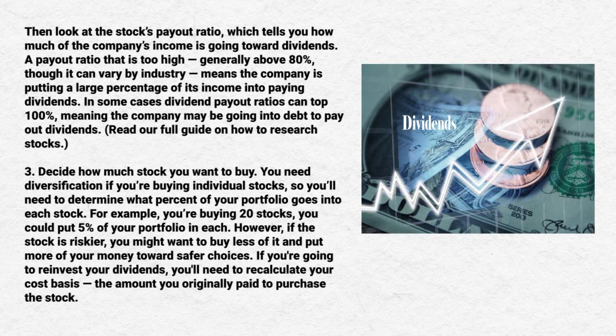Then look at the stock's payout ratio, which tells you how much of the company's income is going towards dividends. A payout ratio that is too high — generally above 80 percent, although it can vary by industry — means the company is putting a large percentage of its income into paying dividends. In some cases, payout ratios can top 100 percent, meaning the company may be going into debt to pay out dividends.